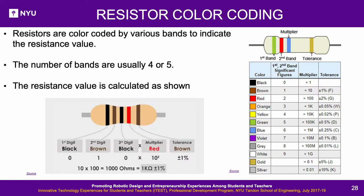Resistor color coding: Resistors are color coded by various bands to indicate the resistance value. The number of bands is usually four or five. For a four-band resistor, the first two color bands represent two digits in the resistance value, multiplied by the value of the third band (the multiplier). The last band is the tolerance, indicating error due to temperature. More precise resistors have tighter tolerance.